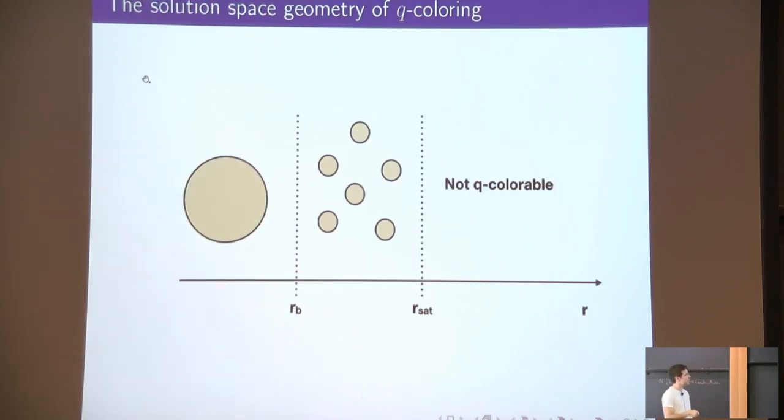As the density increases from being lower than the algorithmic barrier threshold, here is where our algorithms stop, and it goes beyond this, there is a strange phenomenon that happens. There's a dramatic change in the solution space geometry of the problem. Here you should think of each gray point as a solution of the problem. Before the algorithmic barrier threshold, this picture says that the solutions look like a ball. They are very close to each other in Hamming distance. You can jump from a solution to another by changing the value of one variable. So it's a very well-connected space.